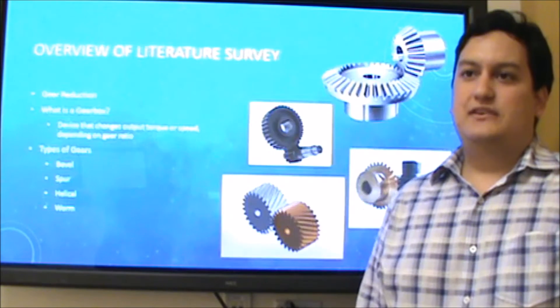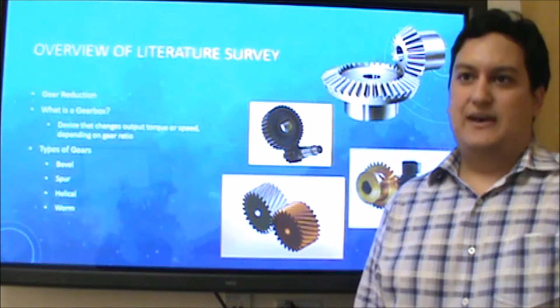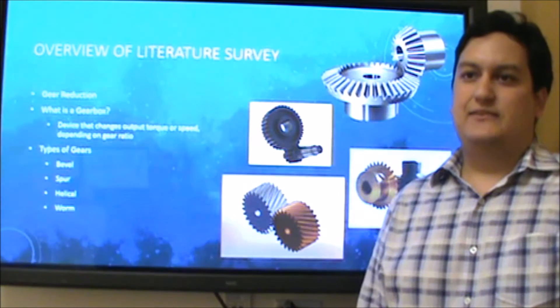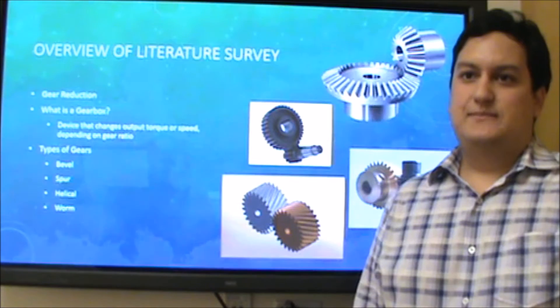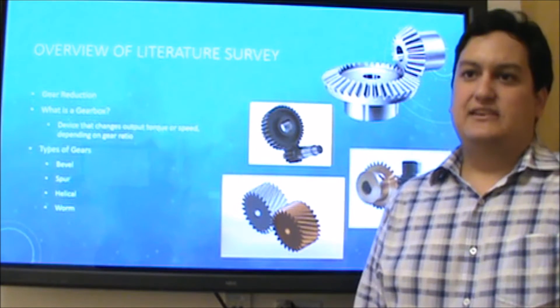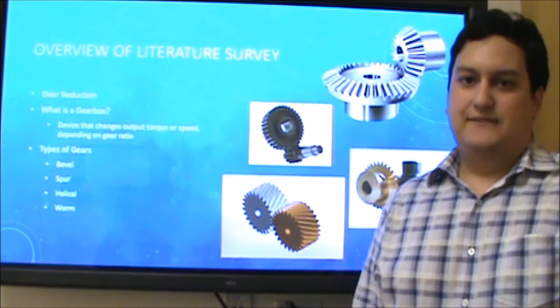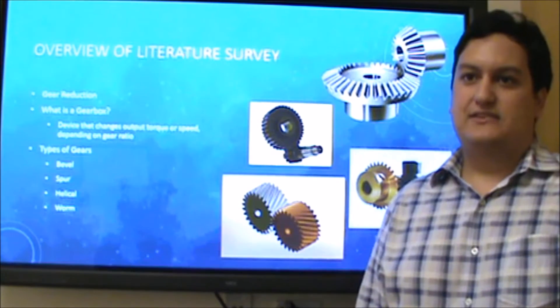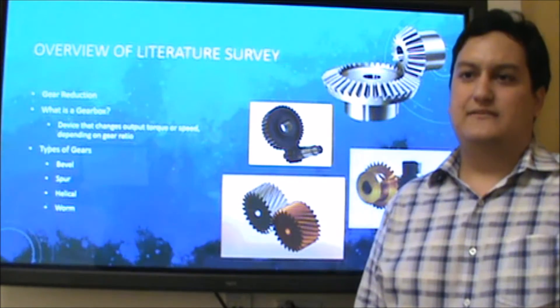In the survey of our literature, we looked over documents that help us understand the background information of Gearboxes and how they reduce speed. Gear reduction of speed or torque depends on the different sizes of the gears. What is a Gearbox? A Gearbox is a device that contains a configuration of gears of different types in order to change the output speed or torque of a motor.